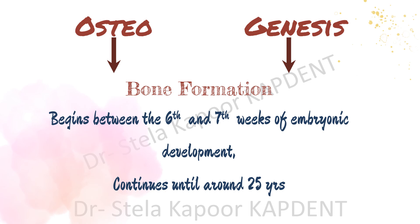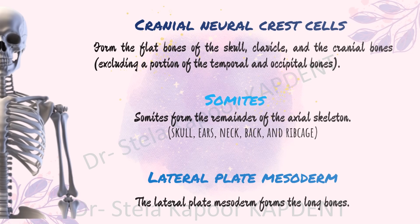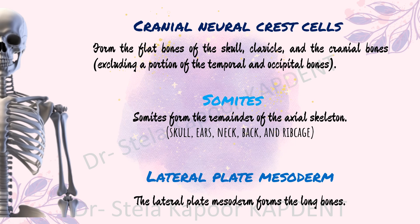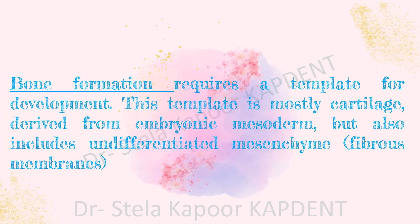Embryologically, it is the cranial neural crest cells which form the flat bones of the skull, clavicle, and the cranial bones, excluding a portion of the temporal and occipital bones. The somites form the remainder of the axial skeleton, which includes the skull, ears, neck, back, and the rib cage. It is the lateral plate mesoderm which forms the long bones.